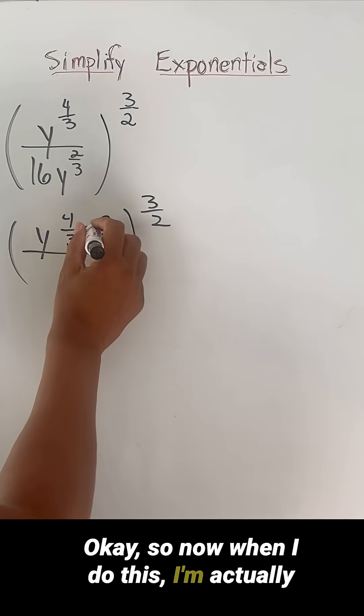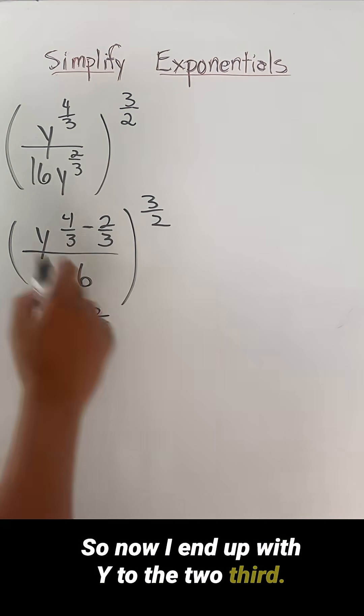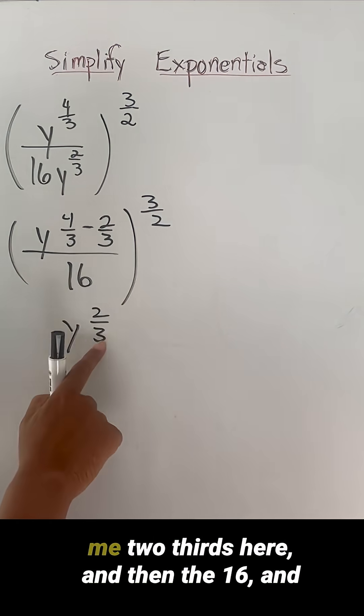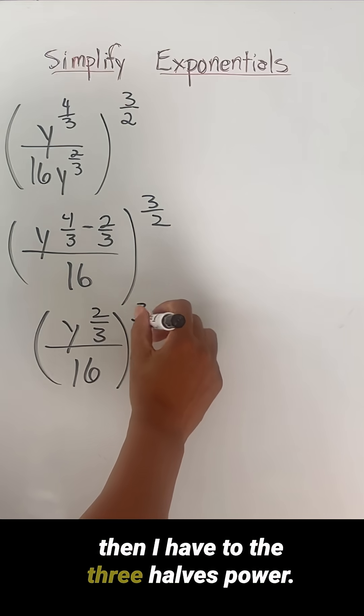Okay, so now when I do this, I'm actually subtracting up here. So now I end up with y to the two thirds. Four thirds minus two thirds gives me two thirds here, and then the 16, and then I have to the three halves power.